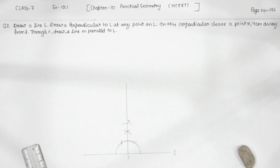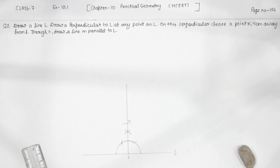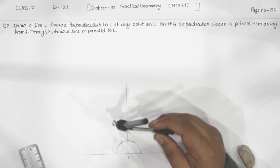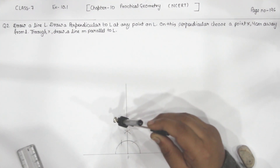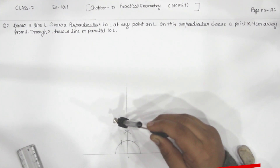Now we are going to draw one more perpendicular on the point X. For that, we will take the compass with any radius and draw the perpendicular.